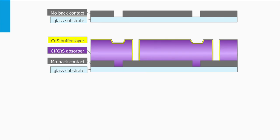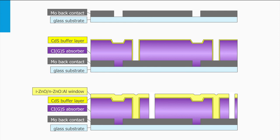Finally, the intrinsic and p-doped zinc oxide is deposited followed by a final laser scribes step. Now, the front TCO electrode is connected with the molybdenum back contact of the next solar cell.